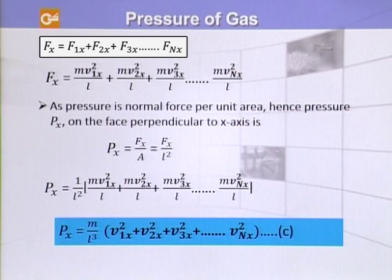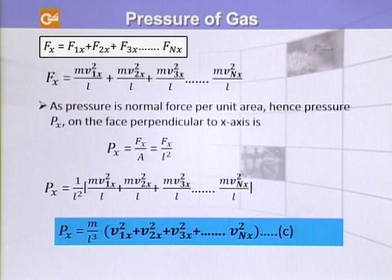Now we have calculated the force, and we want to find the pressure of the gas. Pressure is basically force per unit area. So the pressure in the X direction, which is the force perpendicularly applied to the face, is PX = FX / A, where A is the area of the face, which is L². Putting in the values, we get equation C: PX = (M / L³) × (V1X² + V2X² + ... + VNX²).